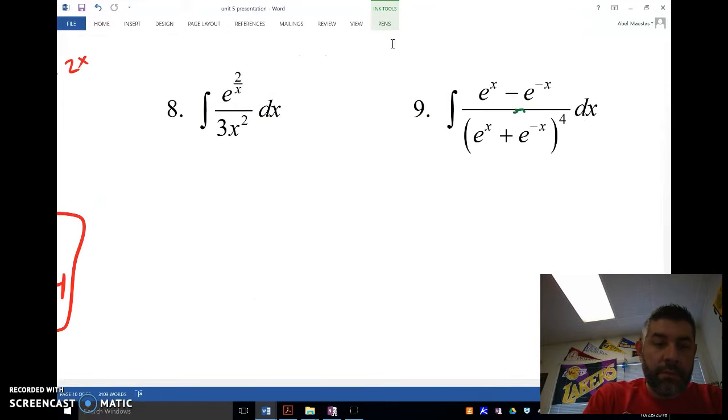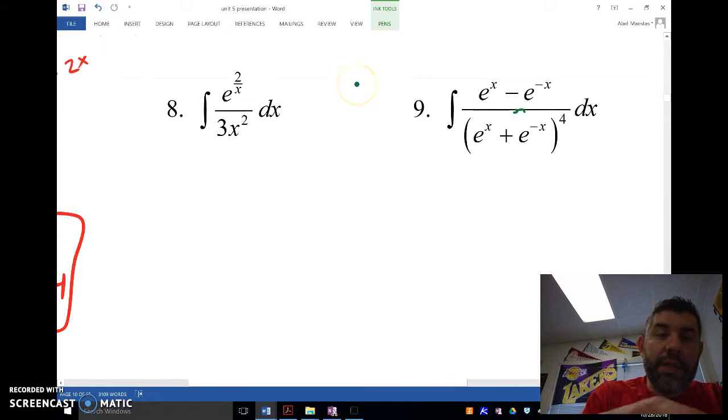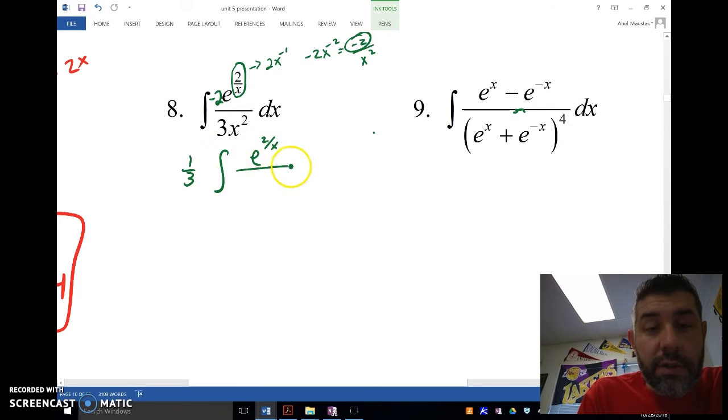Let's take a look at the next one that I have here. And it is integral of e to the 2 over x divided by 3x squared. Again, this is a reverse chain rule because we have something other than an x here. So we're going to have 2 to the negative 1 and the derivative of that is going to be negative 2x to the negative 2. Now, we've already got the 3x squared down here because this is negative 2 over x squared, right? So what are we going to do? I think the easiest thing here to do is just to take out this 3 as a 1 third and then put in a negative 2 here that I need right here.